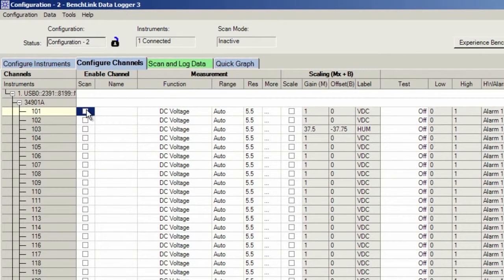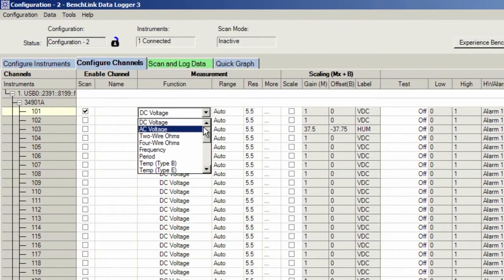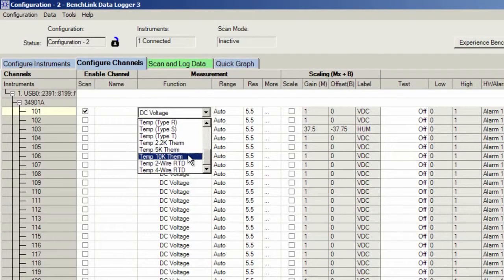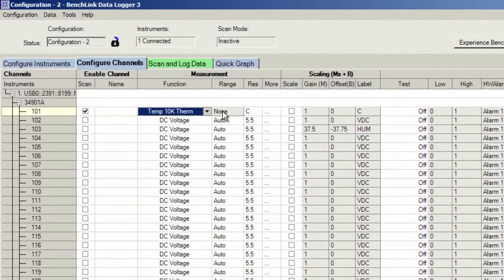On the first channel, I get to select what type of sensor we have connected, and again I have the 10k thermistor. So I'm going to select that from the pull-down menu. Again, we'll measure in degree C, so this channel is configured.